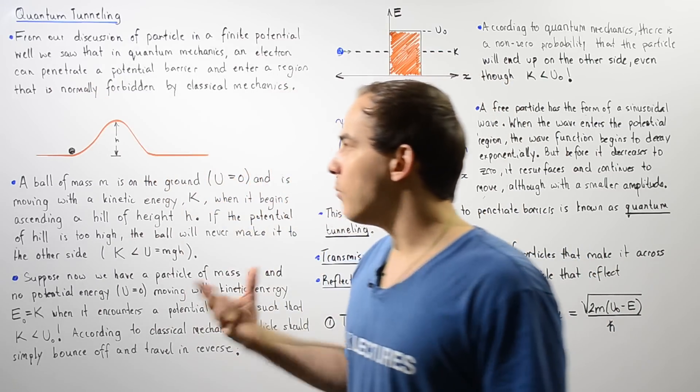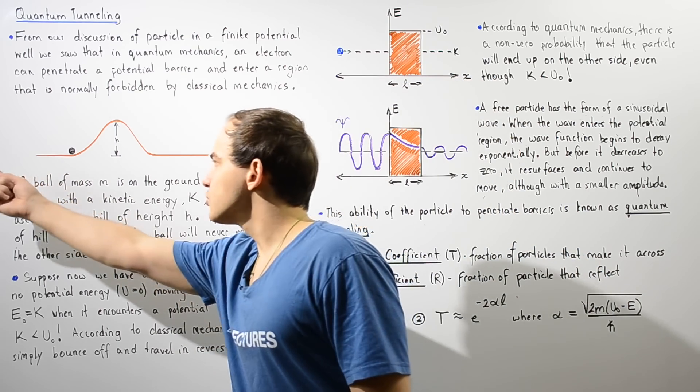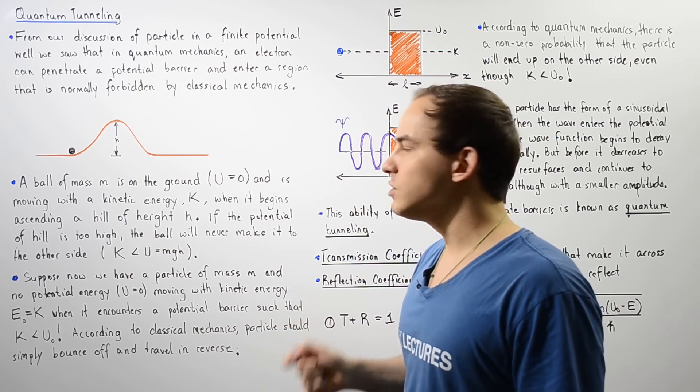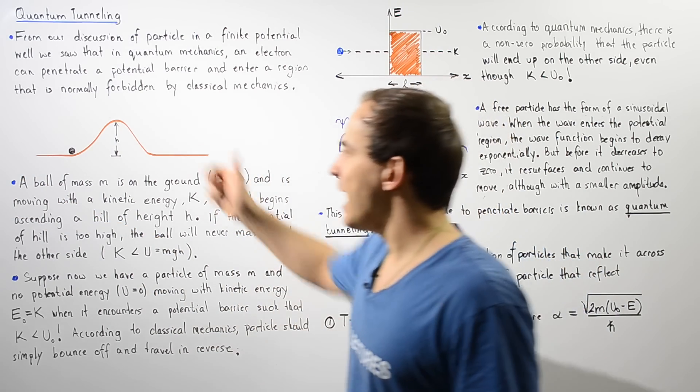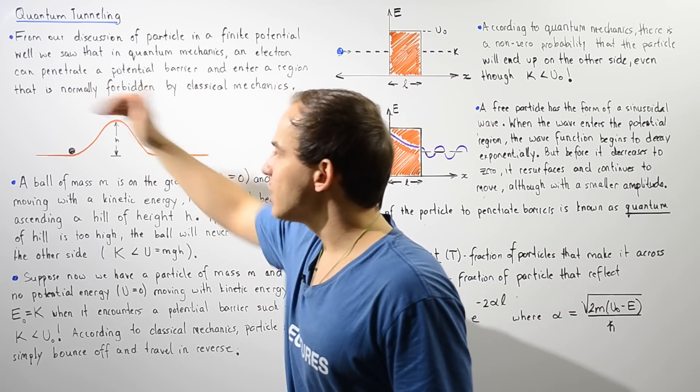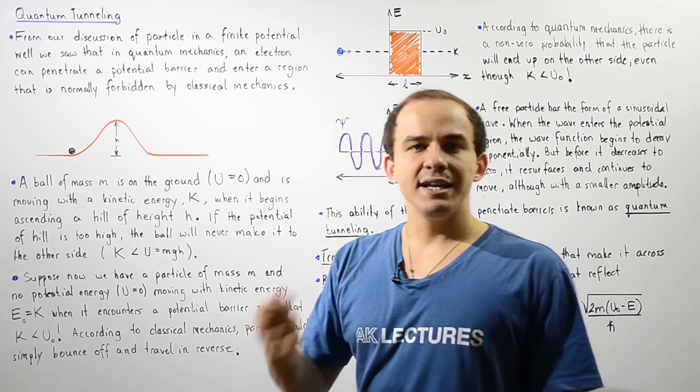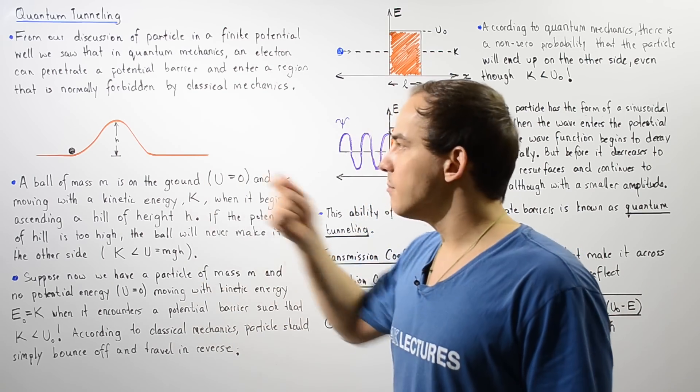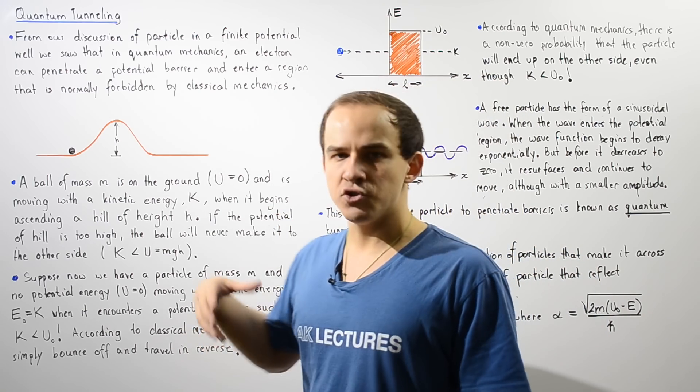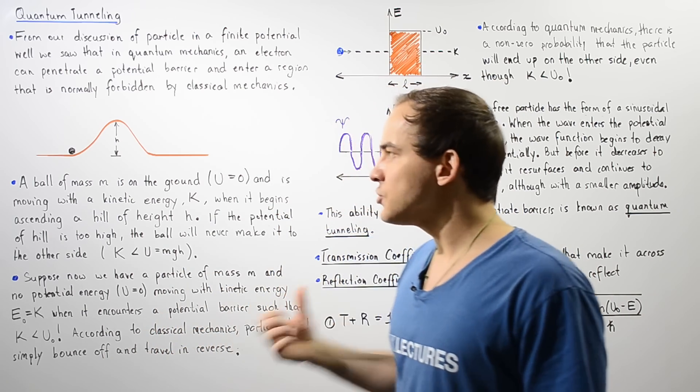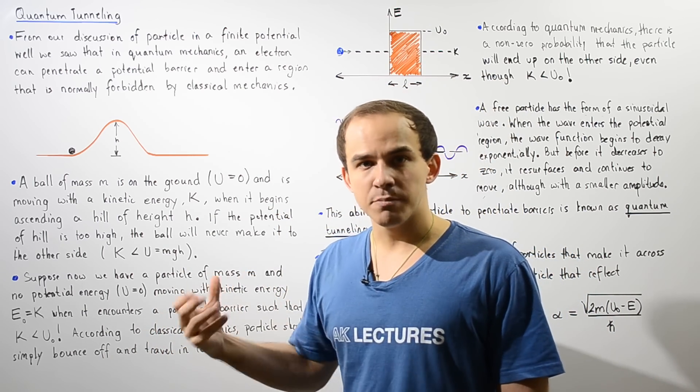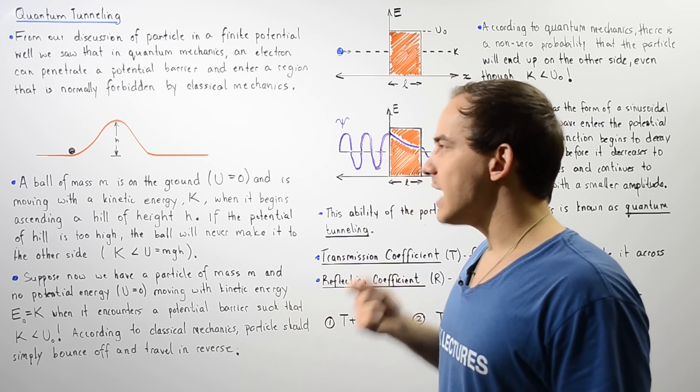We also have a ball of mass m that is rolling along the ground with kinetic energy K when it ends up at the bottom of our hill. So as it ascends our hill, the kinetic energy that is stored in the motion of that object will be transformed to potential energy, to gravitational potential energy of that object.